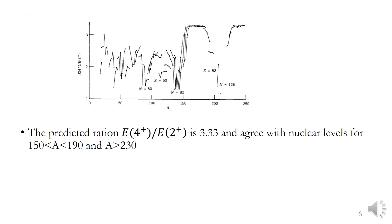The second evidence is the predicted ratio of the energy of the 4+ state to the energy of the 2+ state. Using the rotational energy model, this ratio is calculated as 3.33. Looking at the experimental results for even-even nuclei — specifically the atomic mass regions 150 to 190 and greater than 230 — you can notice that the ratio E(4+)/E(2+) is very near to 3.3, almost perfectly matching the predicted ratio of 3.33. This is the second evidence supporting the rotational effects on nuclei.